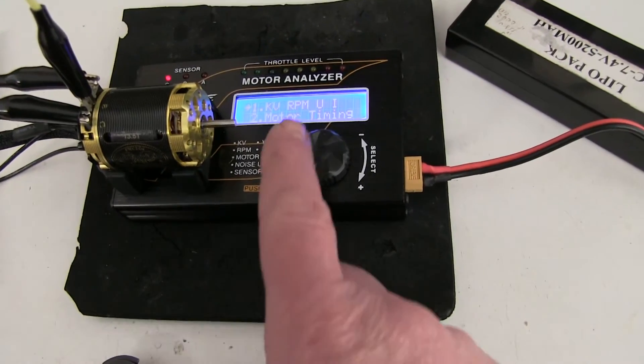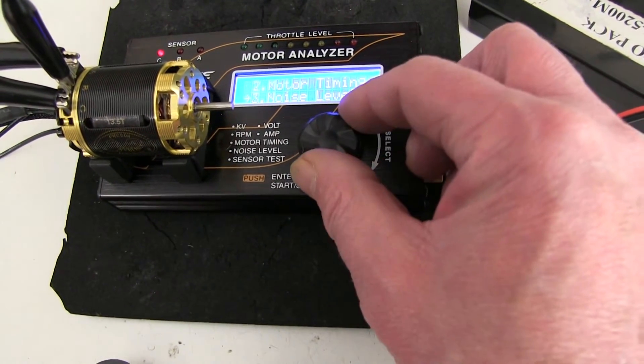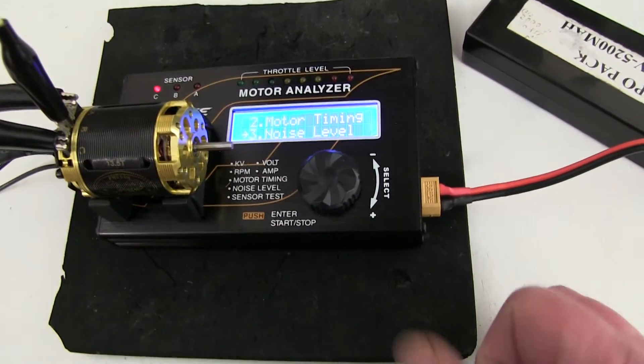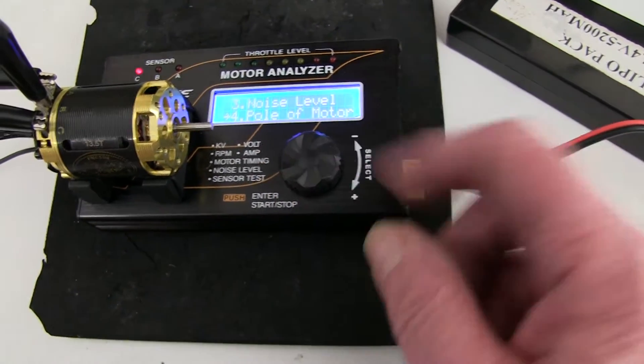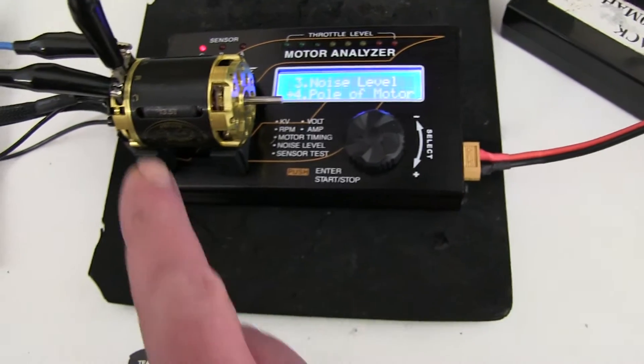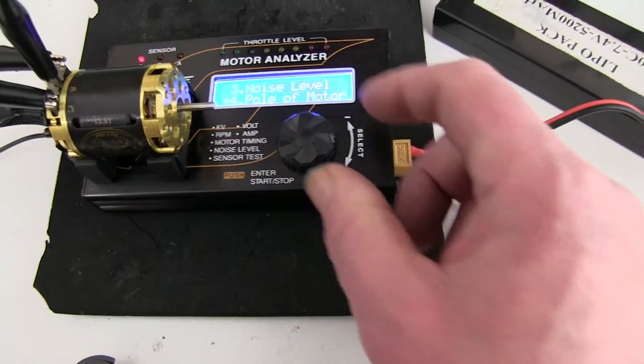It checks the KV rating. You can do motor timing. You can check the noise as well, which may or may not be useful. And you can set up the number of poles of a motor. This is a two-pole, used in a one-tenth electric racing.